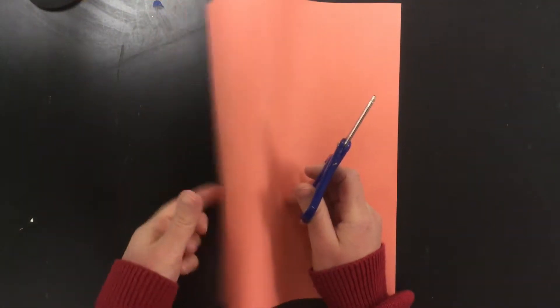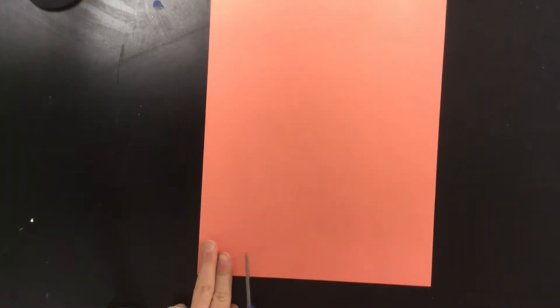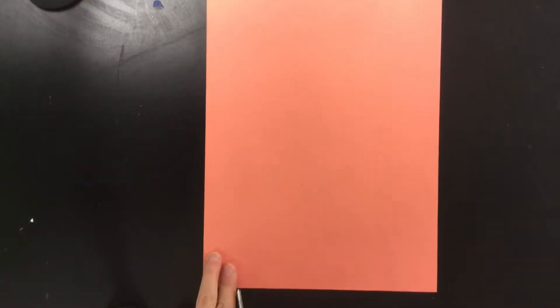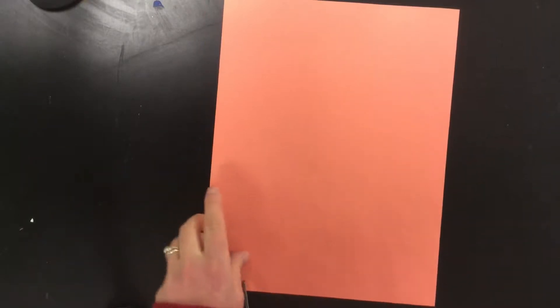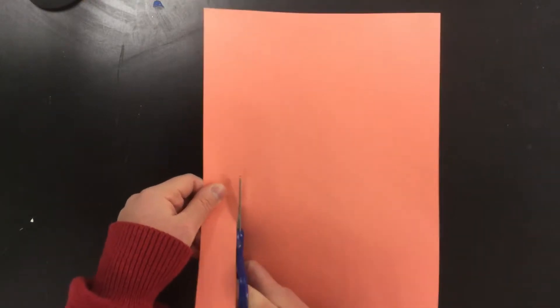First we're going to start by cutting our paper into long strips. You're going to want to make sure the strips are about as long as two of your fingers together. So actually place your fingers on the paper to see how wide that would be and then cut a strip that wide.